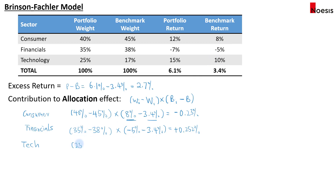For technology, that would be 25% minus 17%, so the manager has overweighted technology. In the benchmark, tech is earning 10% versus the overall benchmark of 3.4%, giving positive 0.528%. This is the right decision because technology is the best-performing sector, and we are overweighting it, so the portfolio will perform better than the benchmark — assuming it holds the same securities as the benchmark.